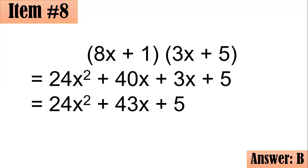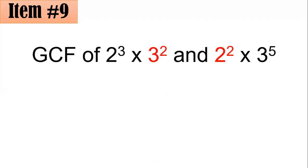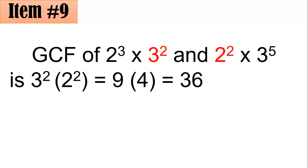Number 9. What is the greatest common factor, or GCF, of 2 cubed times 3 squared and 2 squared times 3 to the 5th? To find the GCF using prime factorization, compare each base: between 2 cubed and 2 squared, pick the smaller exponent — 2 squared. Between 3 squared and 3 to the 5th, pick 3 squared. Multiply them: 2 squared times 3 squared is 4 times 9, which is 36. The correct answer is letter B.